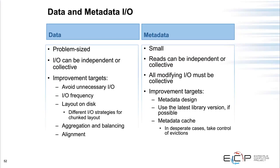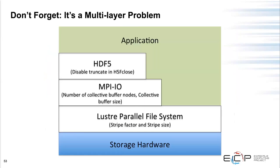For the best performance, use the latest library versions to read and write the latest file format versions — they're generally more optimized. If necessary, tune the metadata caching, but that's uncommon. When debugging performance issues, consider that the problem may be in MPI-IO tuning parameters, the file system striping settings, or possibly the storage hardware rather than HDF5 itself.